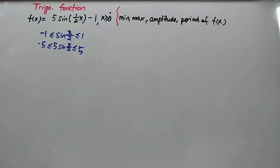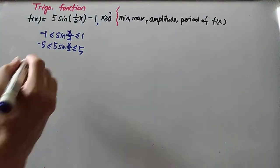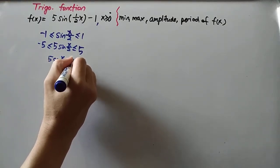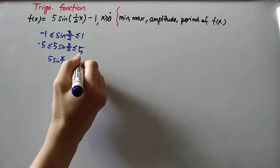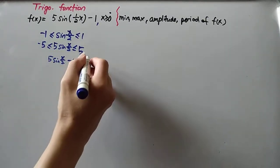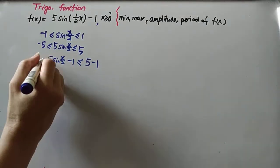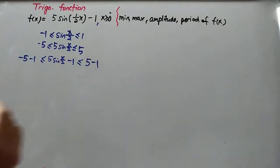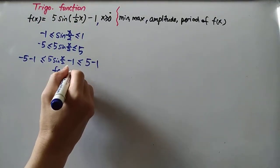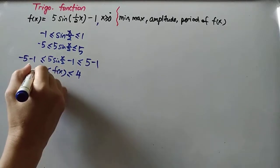Then we minus 1 because this is what we have. So if we minus 1, we have to do the simplification accordingly. This one we can think of as 5 minus 1, and this one will be negative 5 minus 1, so that's why f(x) is less than or equal to 4 and greater than or equal to negative 6.